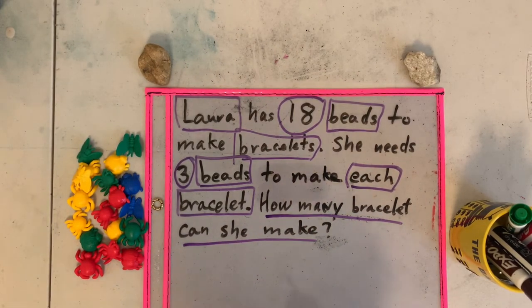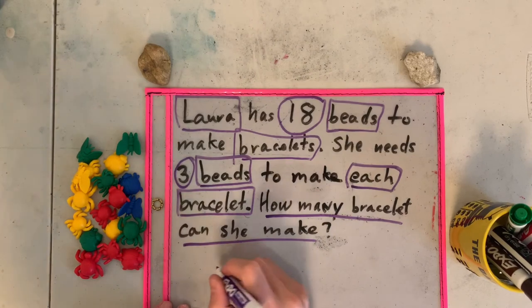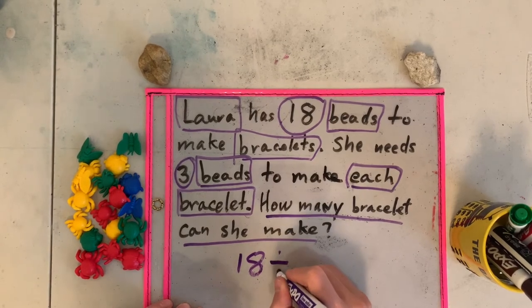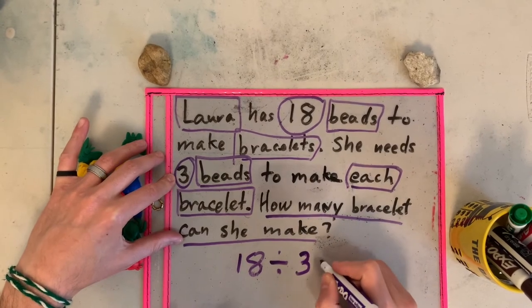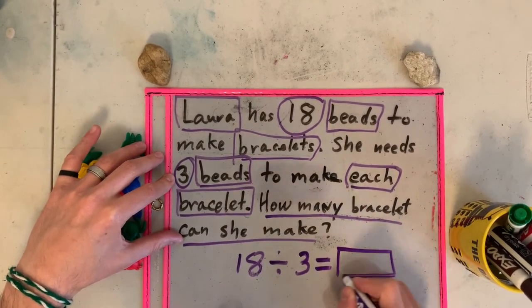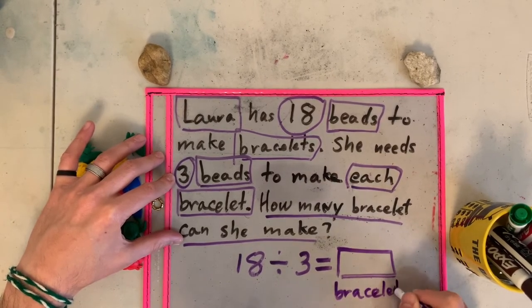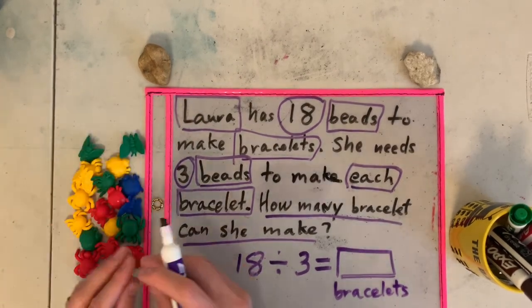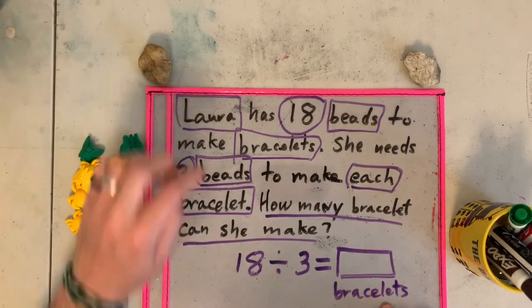So if we do this, this is a division. And the number sentence should go like this: How many beads do we have? We have 18 beads. And we're going to divide 18 into how many beads? Three beads. And the question is, how many bracelets does Laura have? Así que estos dieciocho los voy a dividir en grupos de tres. Y esos grupos de tres me van a decir a mí cuántas pulseras tiene Laura.